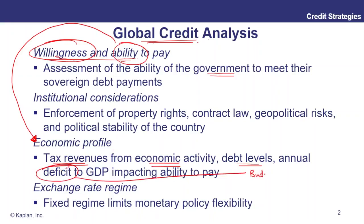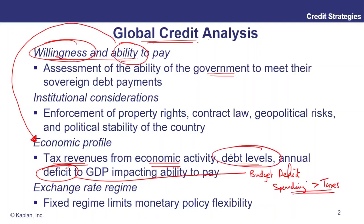A budget deficit is where you are living beyond your means as a nation — where you're spending as a government more than what you're raising in taxes. If that's too big, it's going to have to shrink. You certainly can't keep borrowing and living beyond your means forever.